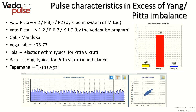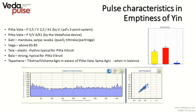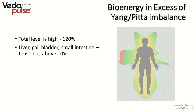Using Vasant Lad's 3-point system, Pitta is always above 3 points; the Vedapulse device shows Pitta higher than 6 points. Vega will be above 73 to 77. Tala is an elastic rhythmical pulse typical for Pitta Vikriti. Bala is strong, typical for Pitta Vikriti in balance. Tapamana is Dikshna Agni. In the cardiointervalogram of the empty syndrome formed as a result of an absolute deficiency of Yin, the cardiointervalogram is kind of torn with a tendency to rigidness of rhythm. In the full heat syndrome, Pitta range is presented substantially in the scatterogram.